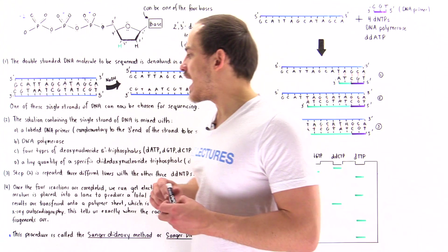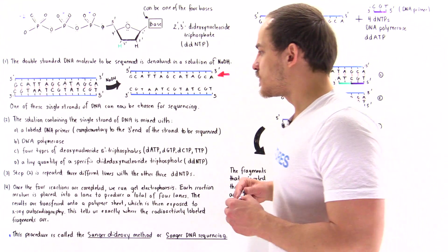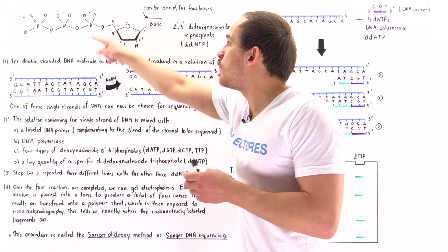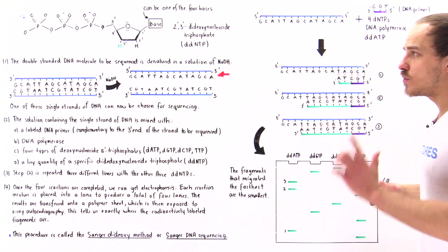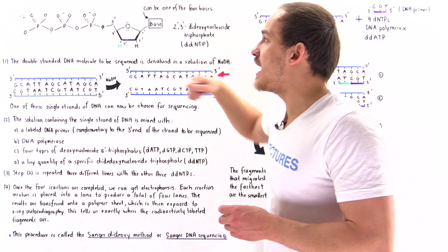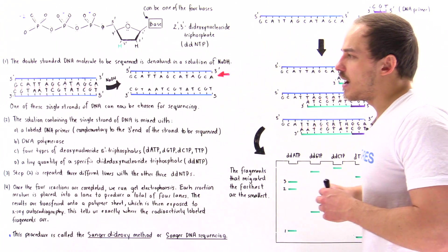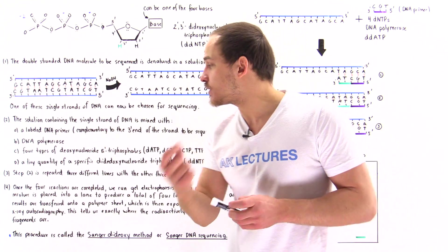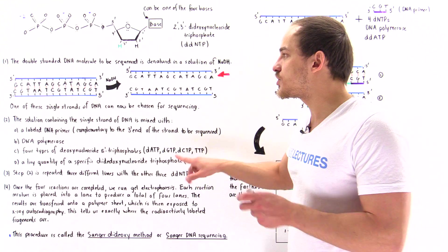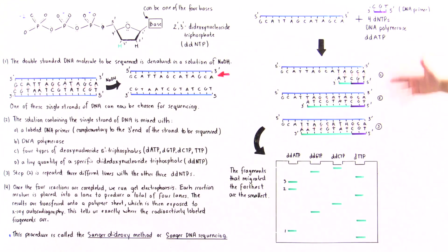We add the DNA polymerase and the four types of deoxynucleoside triphosphates: dATP, dGTP, dCTP, and TTP. The important component in the Sanger dideoxy method is a tiny amount — about one percent — of one of the four types of ddNTP molecules. We have four different types because we have four different bases: adenine, guanine, cytosine, or thymine. In step two, we add only one specific ddNTP type, not all four.